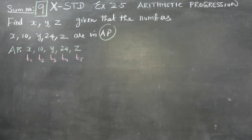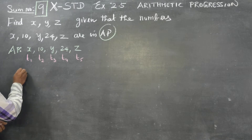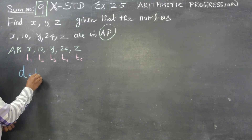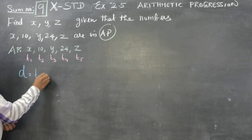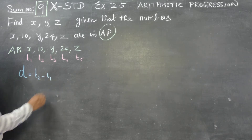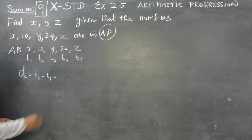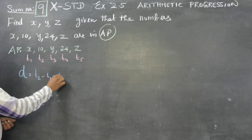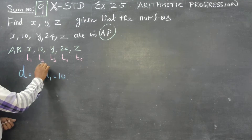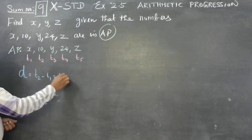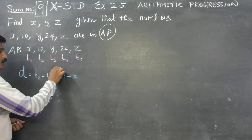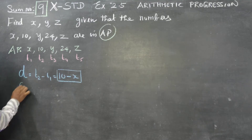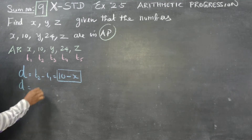I am going to find the common difference. The common difference formula: t2 minus t1 is equal to 10 minus x. This is one common difference.